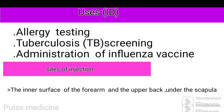Intradermal injection is used in allergy testing, tuberculosis screening, and administration of influenza vaccine. At the sites of injection, you have the inner surface of the forearm and the upper back and under the scapula.